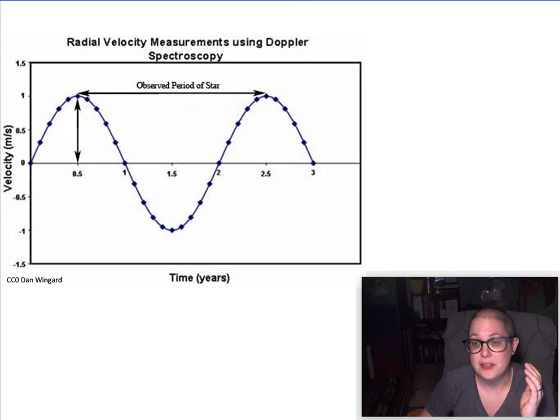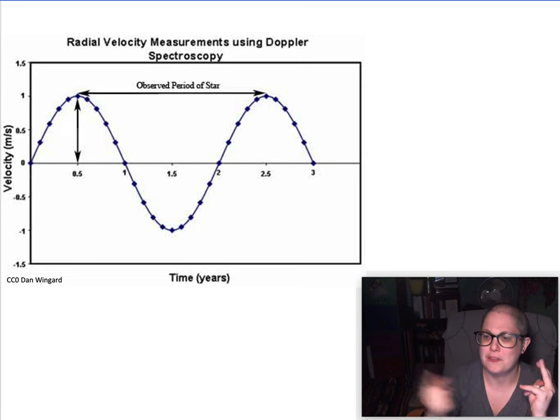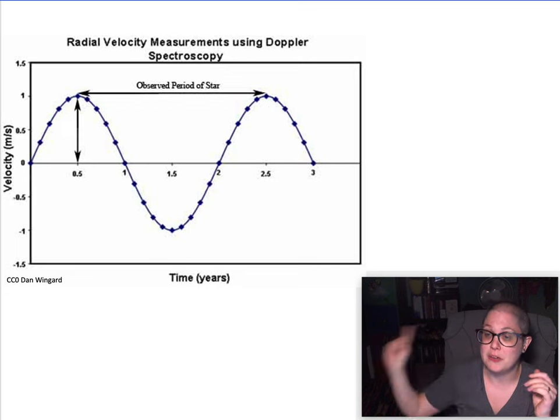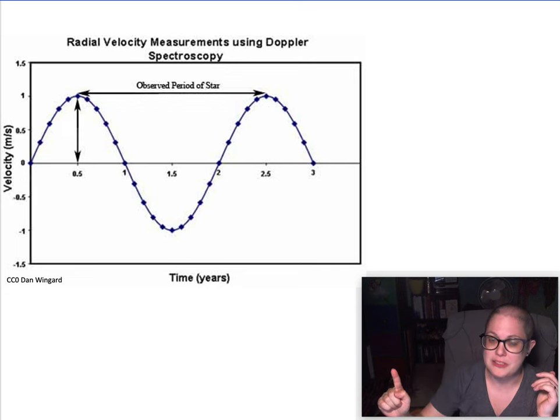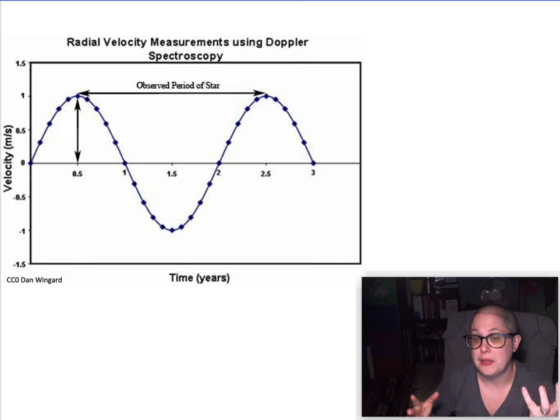You can use that to figure out the period of the star. The period of the star going around once is the same as the period of the planet going around the star once, so that gives you the period of that exoplanet. You can go back and use Kepler's third law if you remember that, from the period and knowing the mass of the star, which you can usually estimate by comparing it to similar stars.